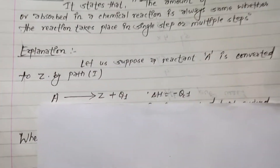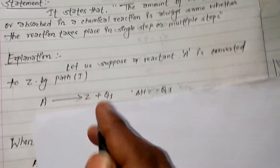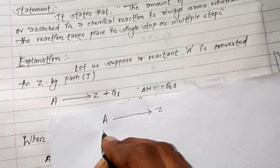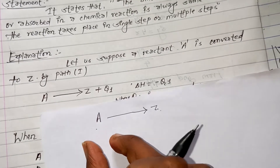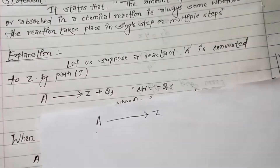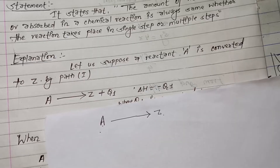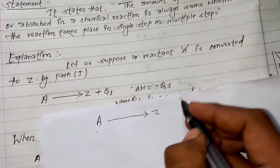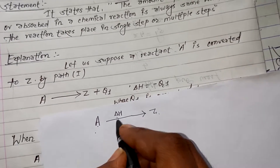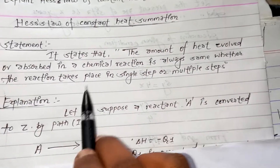Let us suppose a reactant A is converted to Z. When reactant A is converted to Z, a certain amount of heat is evolved. The enthalpy change — delta H — represents the amount of heat evolved or absorbed in this process.